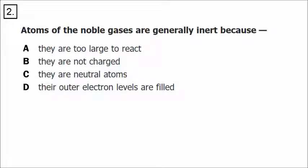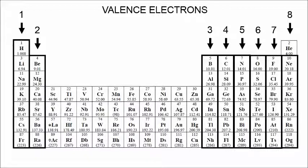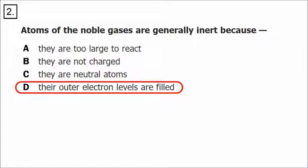Number two: atoms of the noble gases are generally inert. The word inert means non-reactive. This question asks why noble gases won't react with any other elements. The answer is because of valence electrons. An alkali metal in group one like lithium or sodium tends to lose one valence electron to form a positive ion. A halogen in group 17 with seven valence electrons like fluorine or chlorine tends to gain one electron. Either way, they're trying to fill their outer shell with a complete set of valence electrons. The noble gases already have a complete set, so their outer electron levels are filled, making them inert.